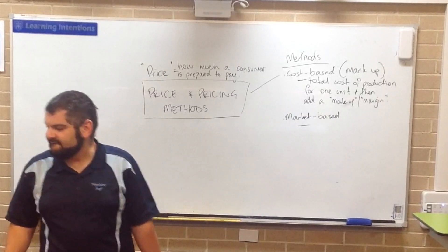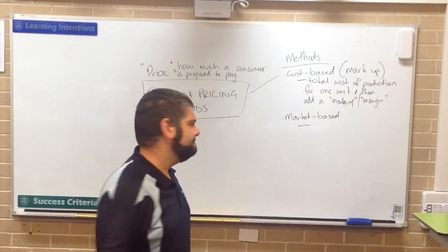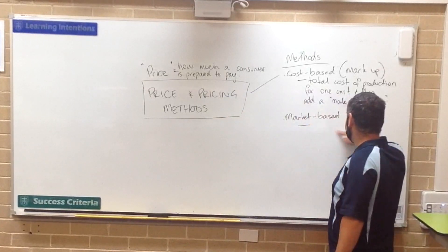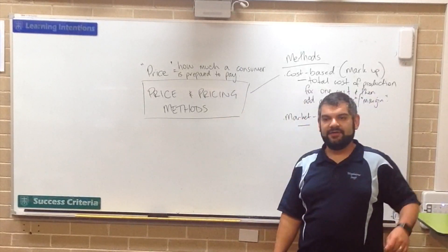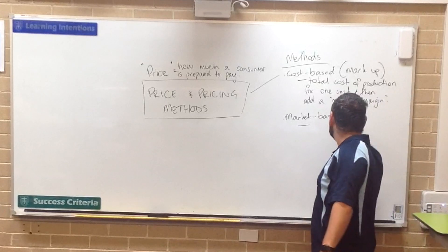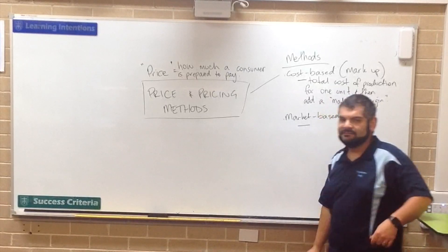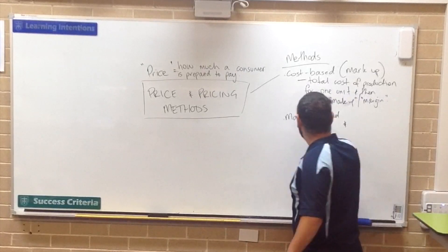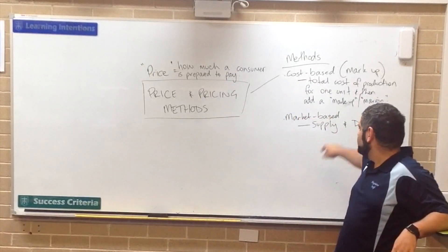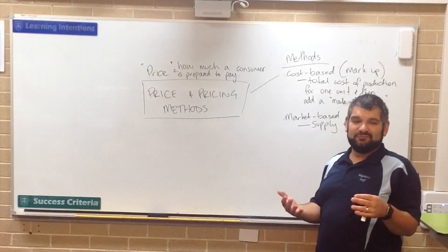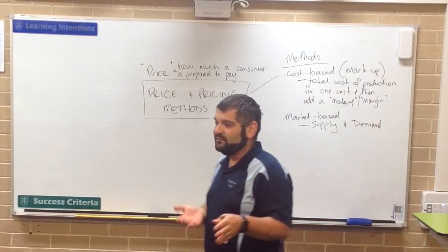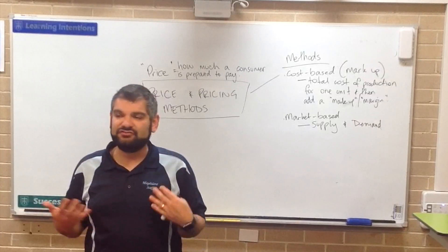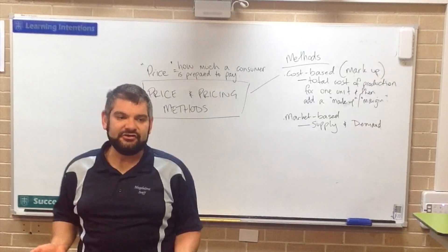What's market-based pricing? How is it determined? It's based on supply and demand — what people are actually willing to pay for this product. It's whatever the market is willing to pay. If people are prepared to pay $100 for an item, then let them pay $100 for the item.